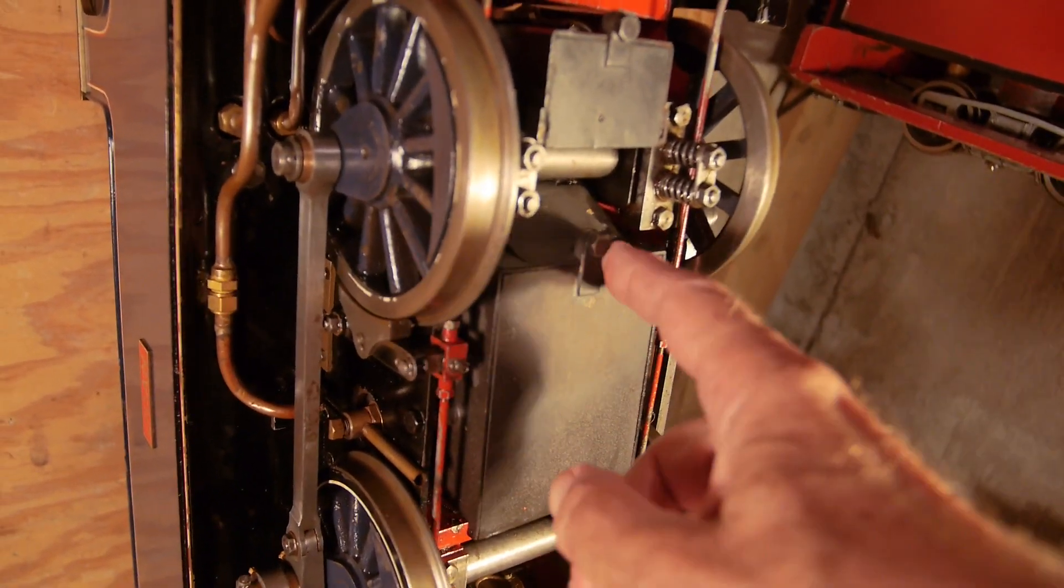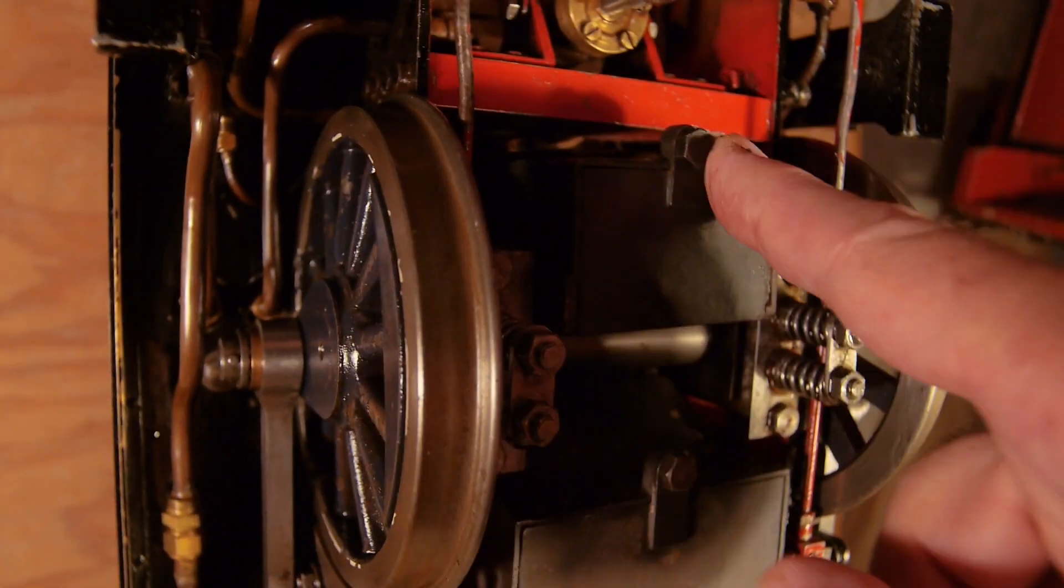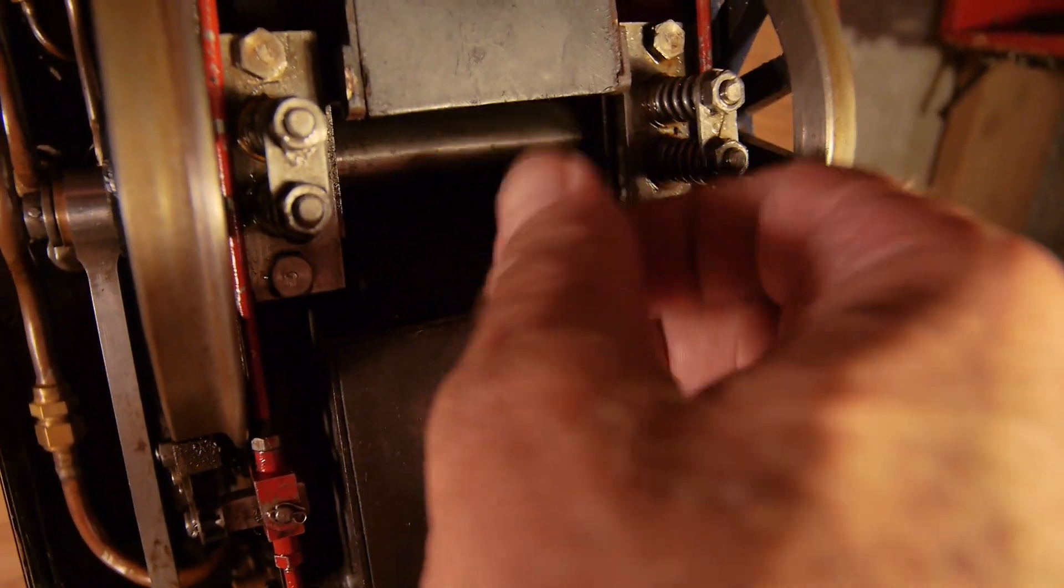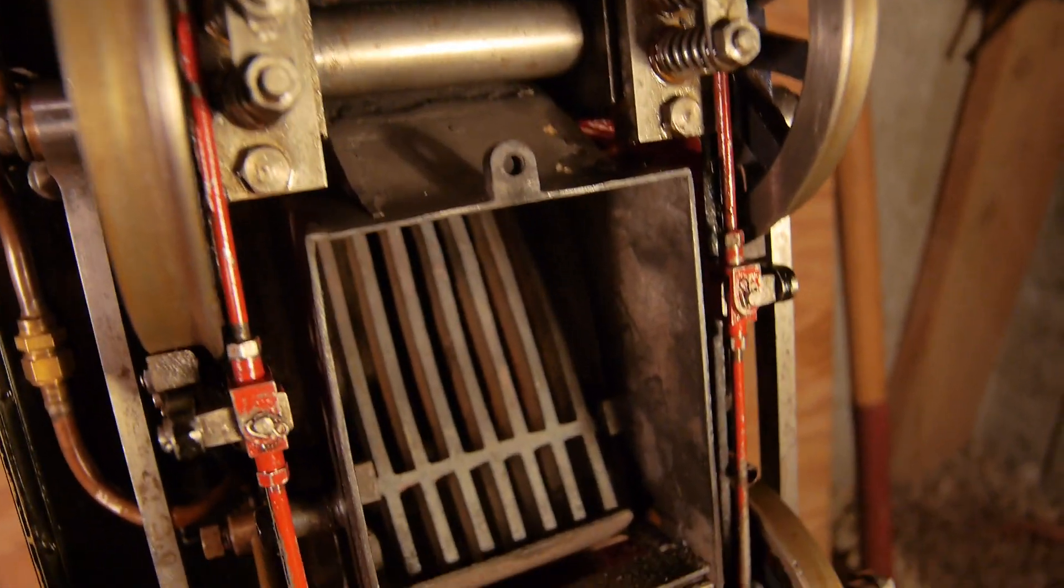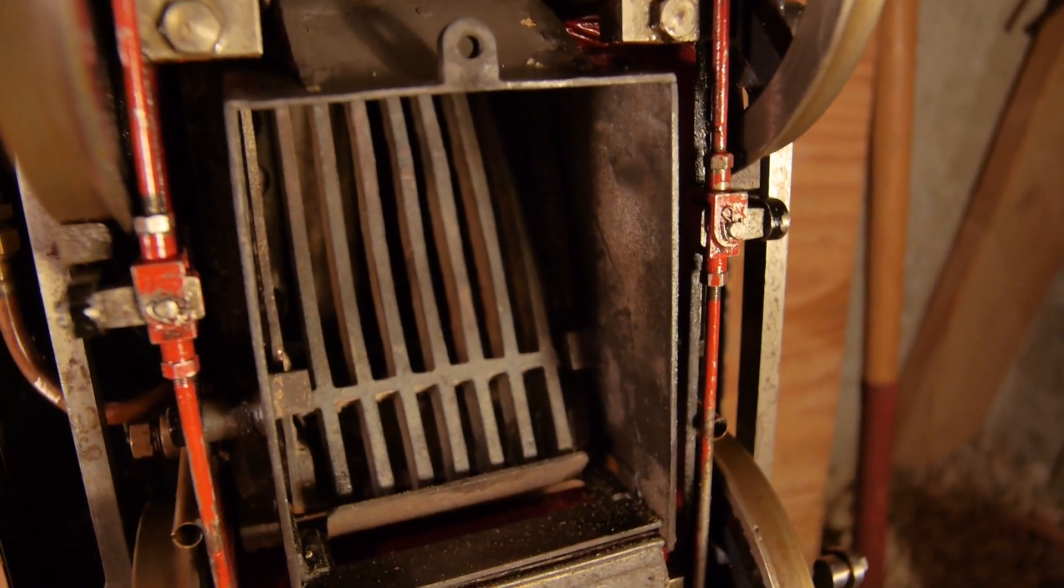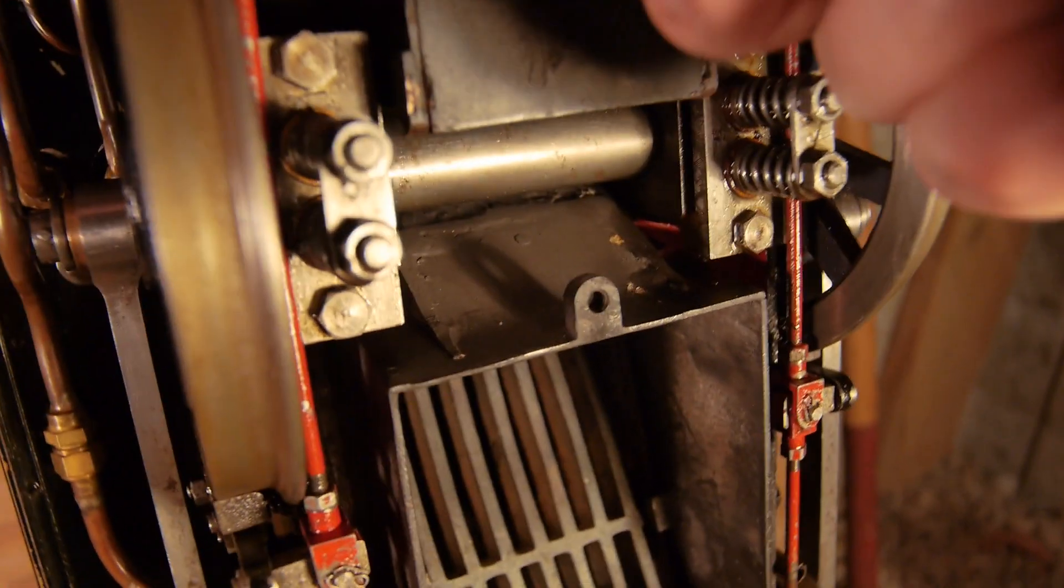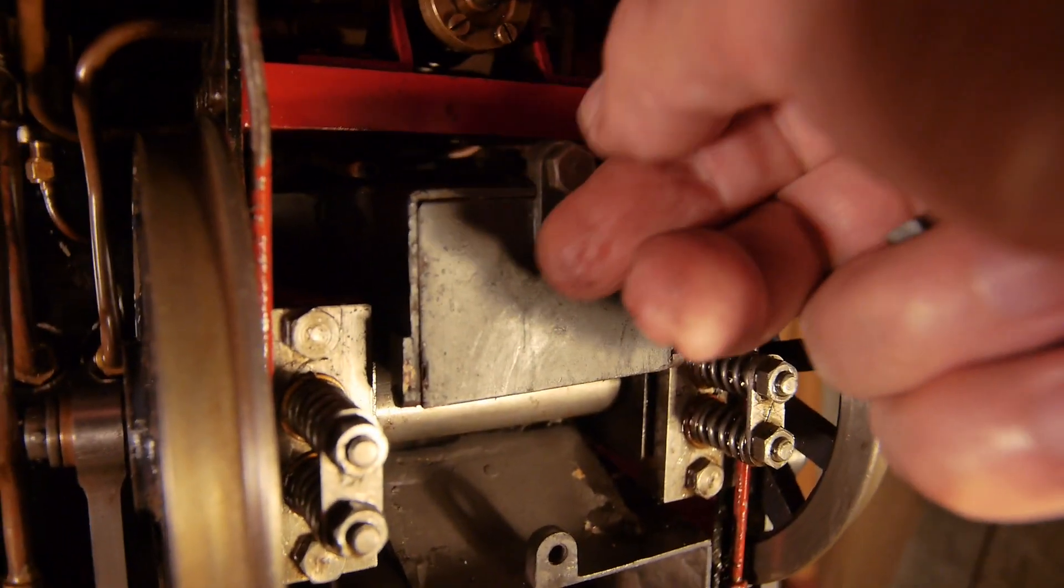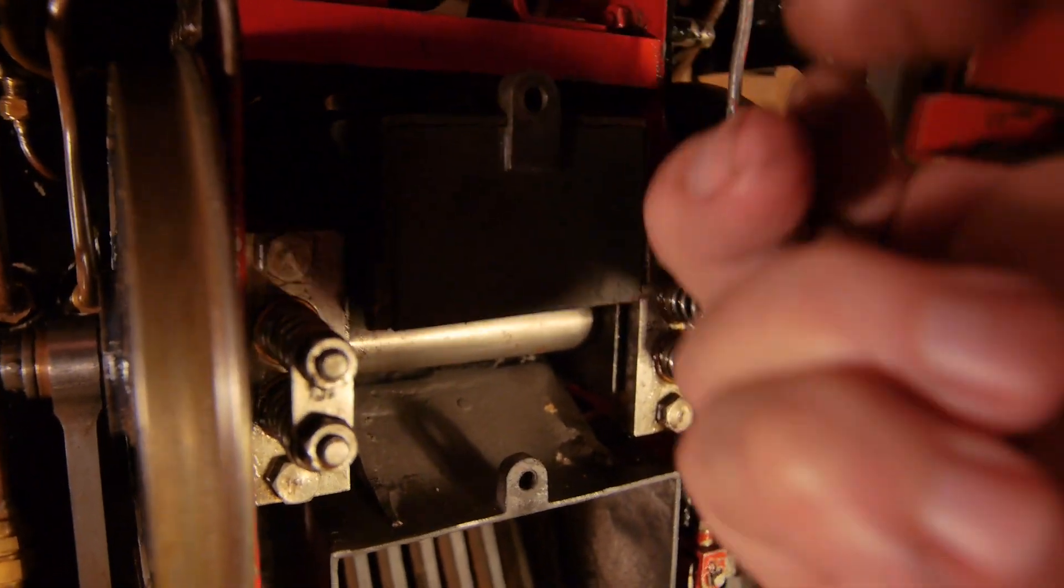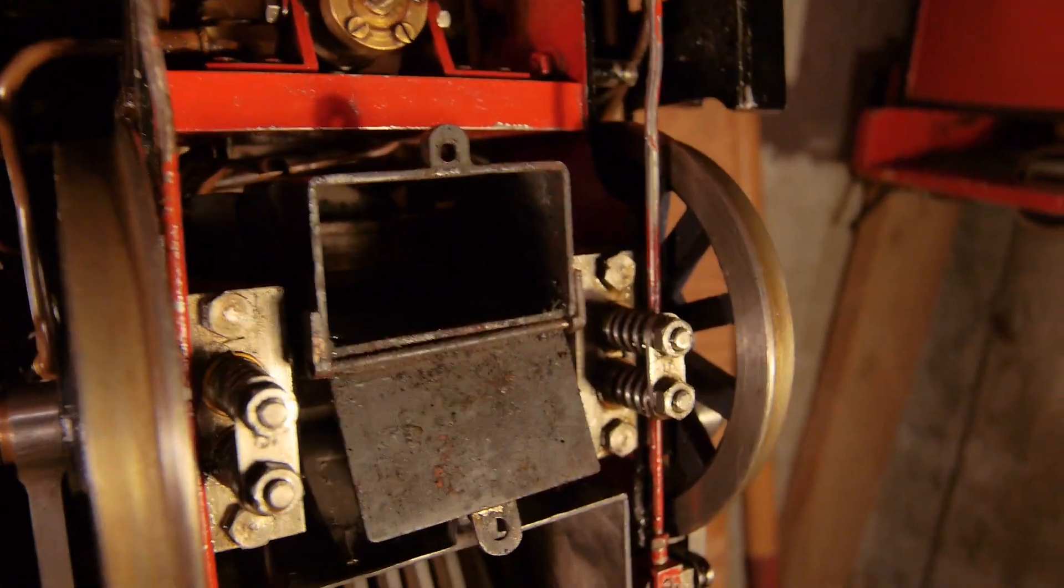You can see the ash pan. All the axle boxes are well protected. No ash is going to get into there. I undo these and flip it down, and you can see the grate inside there. The grate is leaning forward a little bit because the engine is on its chimney. It's nice and deep and has plenty of space for the ashes to fall in.